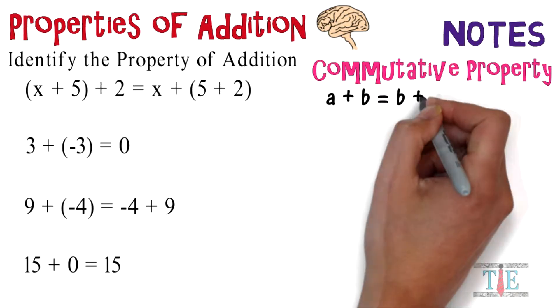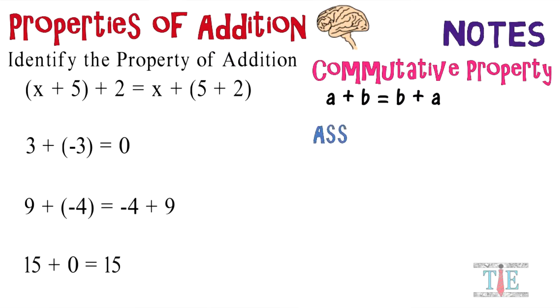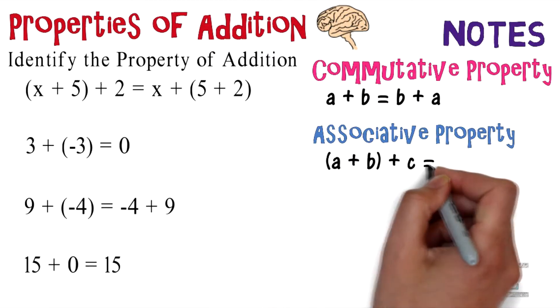equals b + a represents the commutative property. Next up is the associative property: (a + b) + c equals